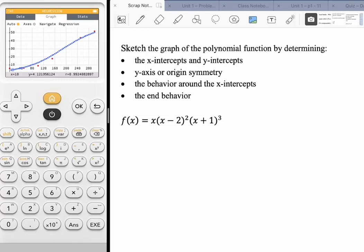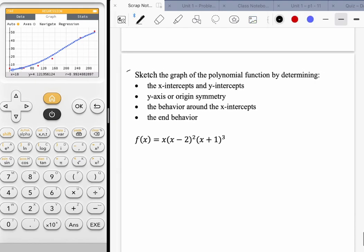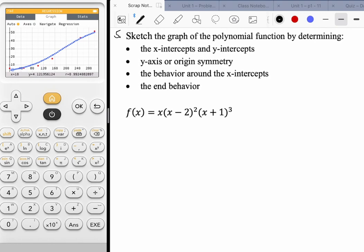Here are a few problems from the Unit 1 practice test for pre-calc. This, I believe, was question 5. Sketch the graph of the polynomial function by determining the x-intercepts, y-intercepts, y-axis or origin symmetry, the behavior around the x-intercepts, and the end behavior in general.